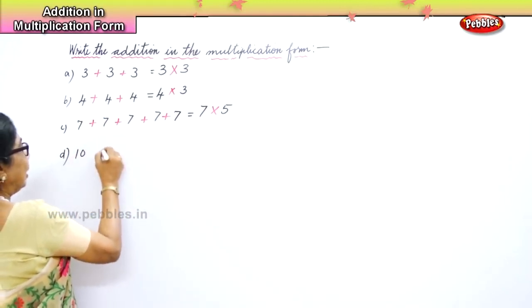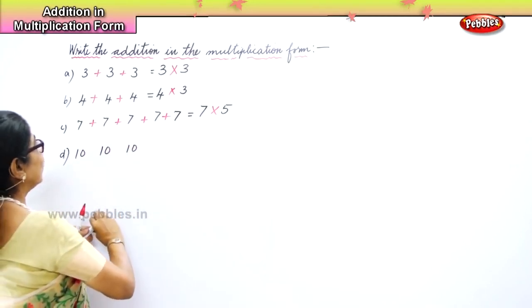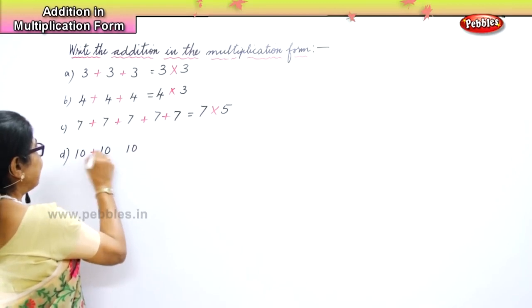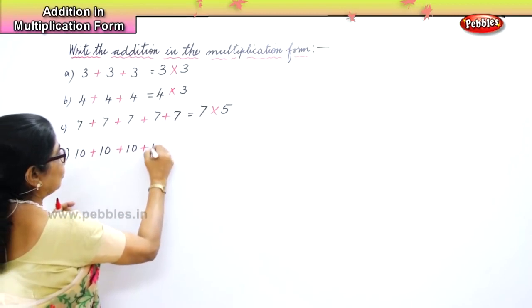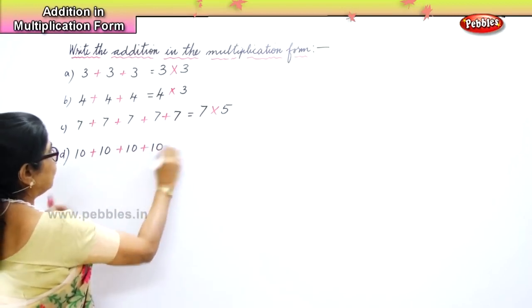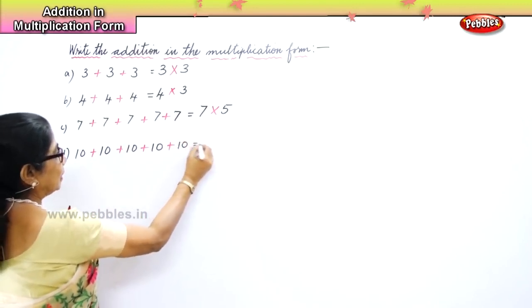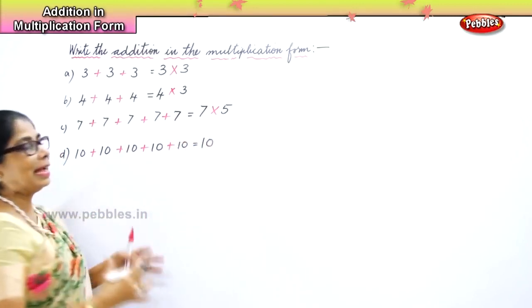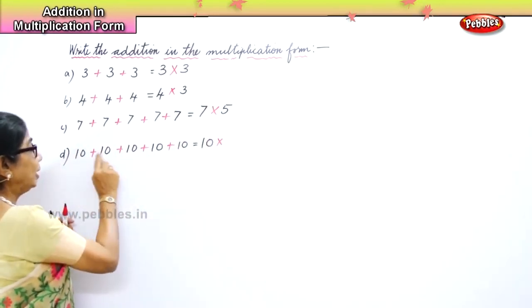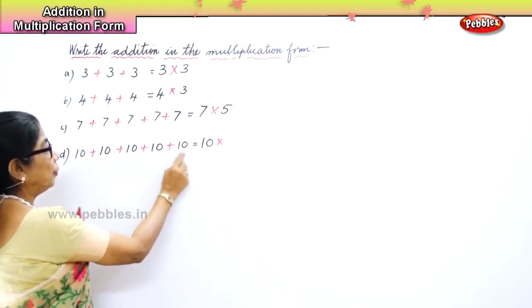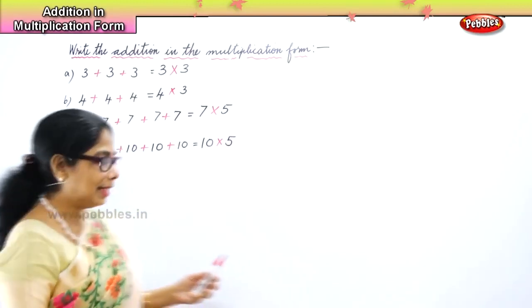Let's say 10 plus 10 plus 10 plus 10. How will you write this? 10, multiplication sign. How many times 10? 1, 2, 3, 4. So 10, 4 times.